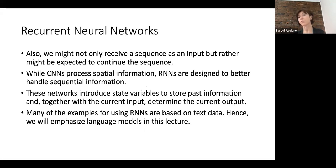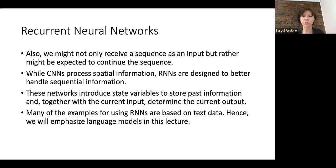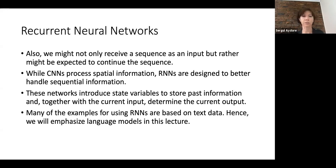We may not only receive a sequence as input but also be expected to continue the sequence. For weather forecasting, you may want to forecast next week or even next month. Convolutional neural networks process spatial information, while recurrent neural networks are designed to better handle sequential information. These networks introduce state variables to store past information and then use the current input together with that state variable to determine the current output.